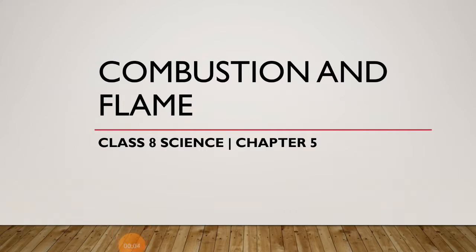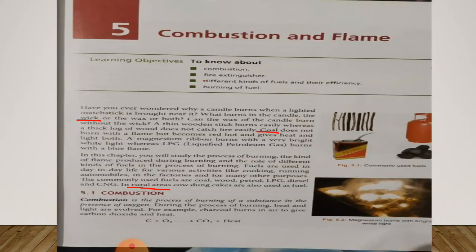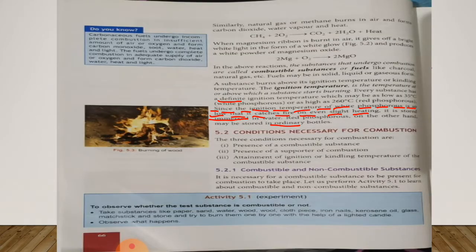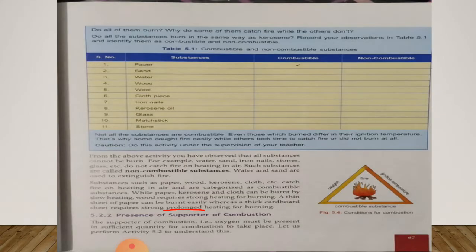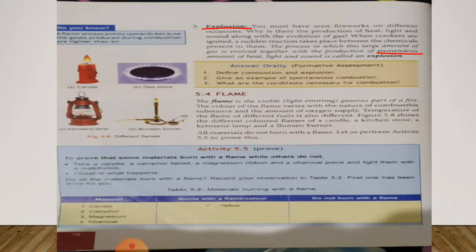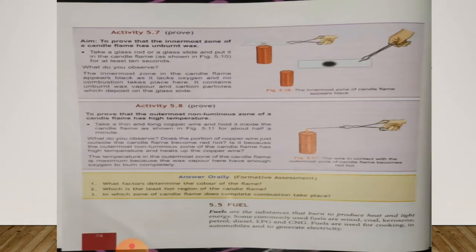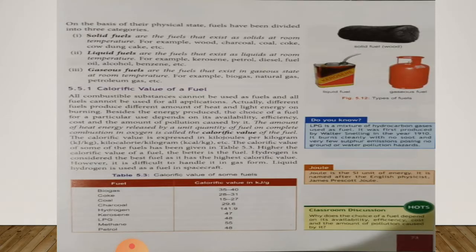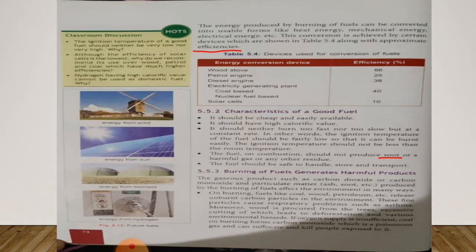Good morning class 8. We were reading chapter 5, Combustion and Flame. In this chapter we have understood about combustion and flame, about some reactions of combustion, conditions necessary for combustion such as combustible and non-combustible substances, presence of supporter of combustion, ignition or kindling temperature. We have understood about types of combustion, about flame, about a candle flame, about fuel, about calorific value of fuel, and about characteristics of a good fuel.